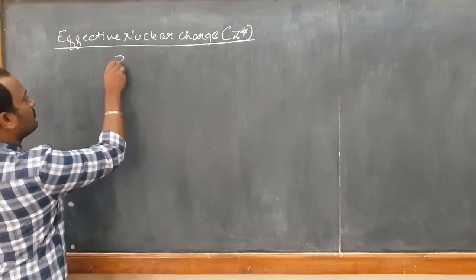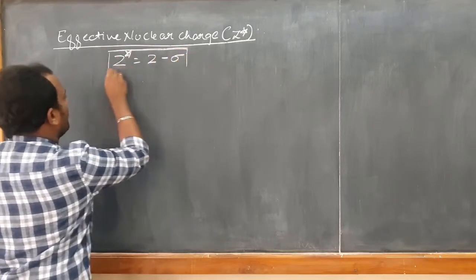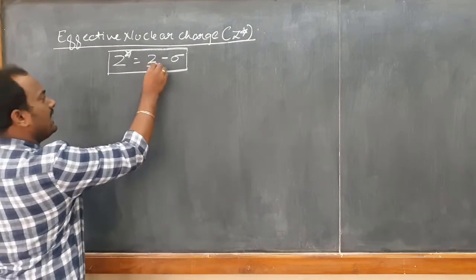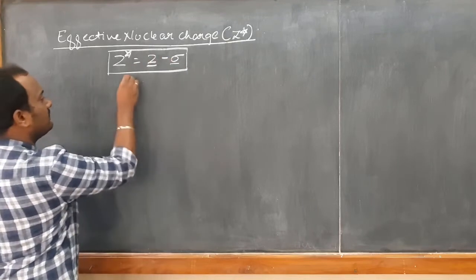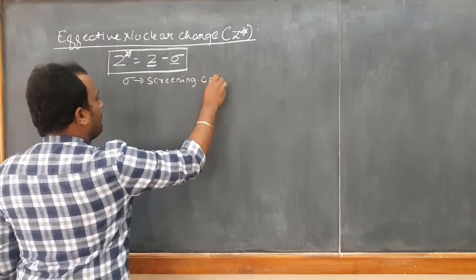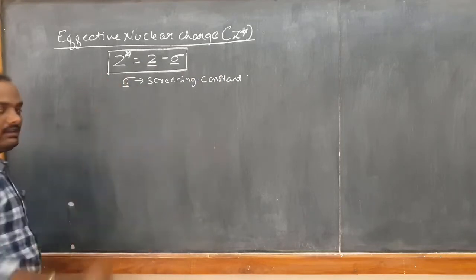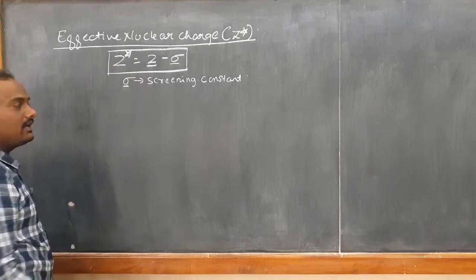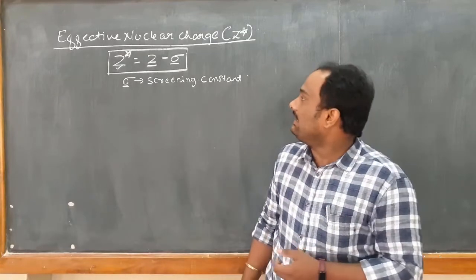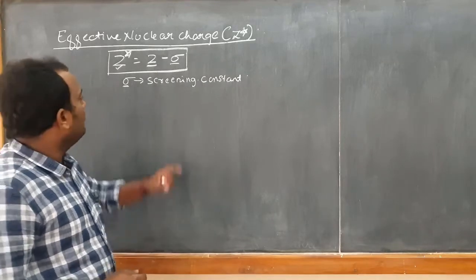To calculate Z star, the formula is Z star equals Z minus sigma. Using this formula, you can calculate Z star — the effective nuclear charge. It is a unitless quantity. Here Z is the atomic number and sigma is the screening constant. You first calculate sigma, then subtract it from the atomic number to get Z star — the effective nuclear charge, also called ENC.